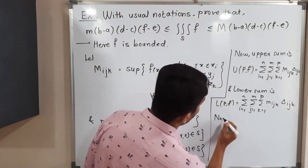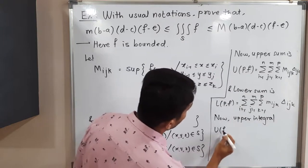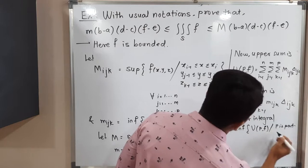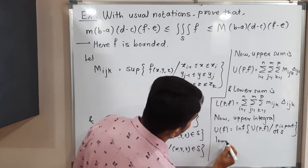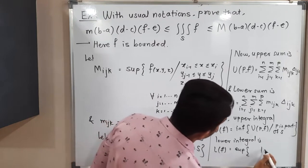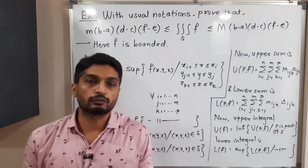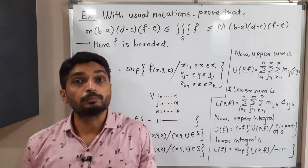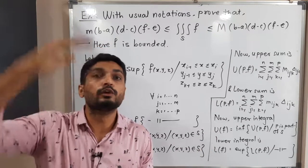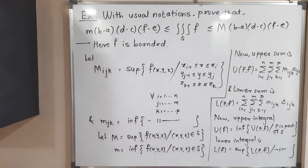Now for upper integral and lower integral. The upper integral Uf is the infimum of U(P,f) over all partitions P of S. The lower integral Lf is the supremum of L(P,f) over all partitions P of S. For different partitions we have different upper sums; the minimum upper sum is Uf. The maximum lower sum is Lf.